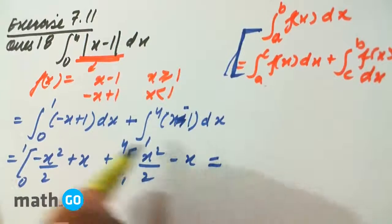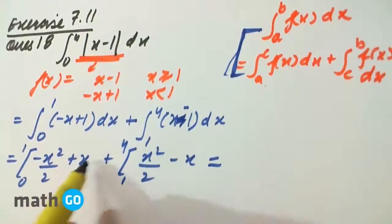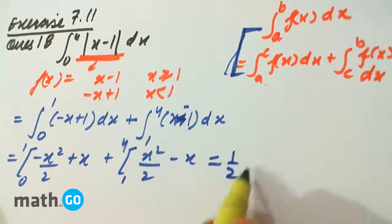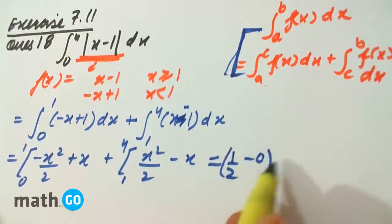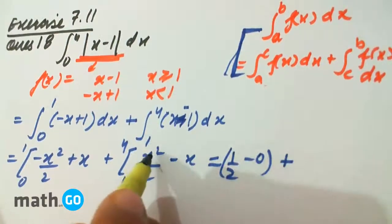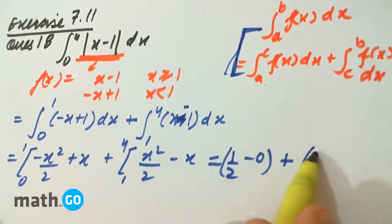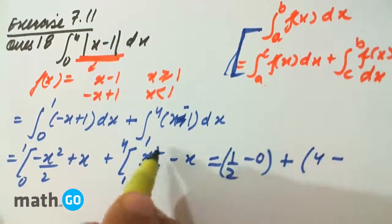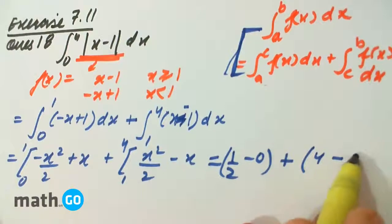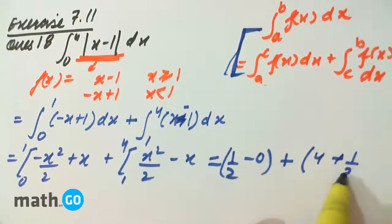So keeping the limits, we have 1 by 2 plus 1, this will give 1 by 2 minus 0, plus we have 16 by 2, that is 8 minus 4, that is 4, minus 1 by 2 minus 1, so plus 1 by 2.